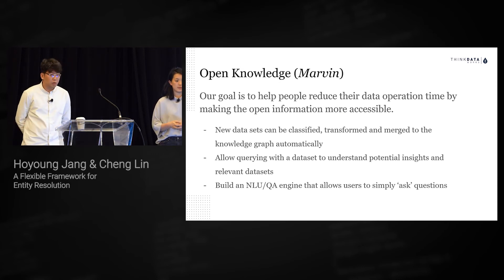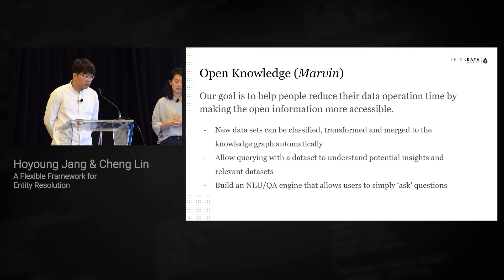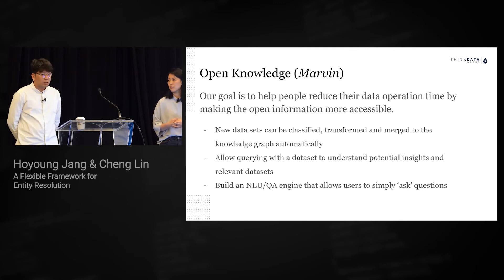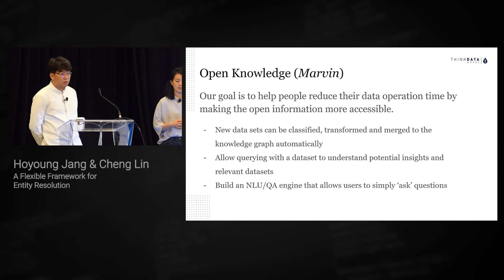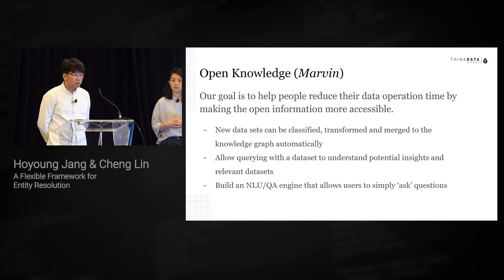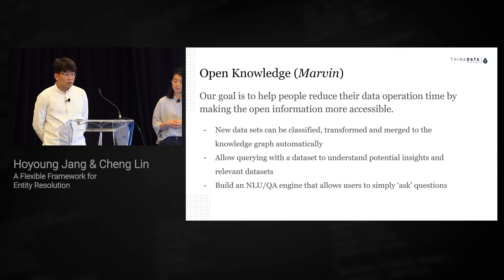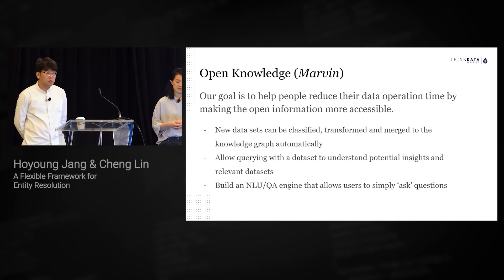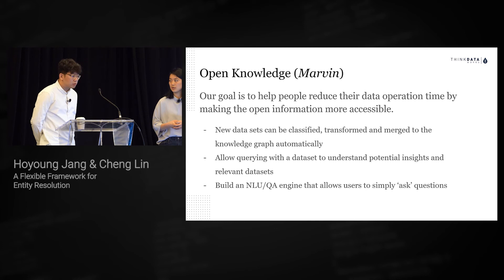This year, we started a new project called Mervin to create an entity understanding engine based on open data. Our main goal for Project Mervin is to make open information more accessible to the public. We're building an automatic data-to-knowledge transformation pipeline. This will help people obtain insights faster in three ways: users can use their own data to query against the open knowledge service; users can use natural language to ask questions and get relevant entities; and users can also get relevant source data for a more detailed view. If you find this problem interesting, our door is always open.